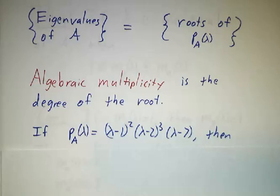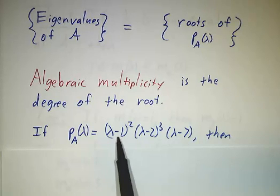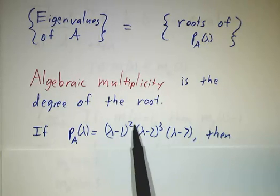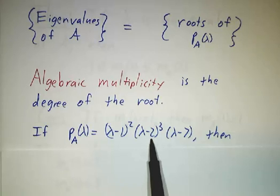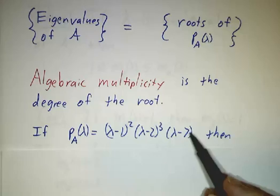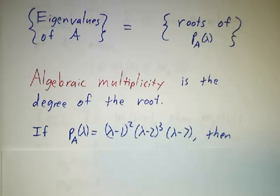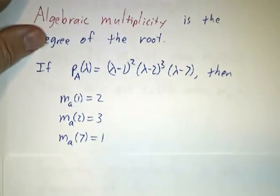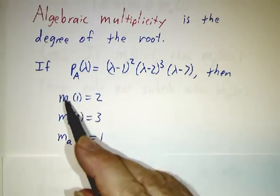So if you have a characteristic polynomial that's (λ-1)²(λ-2)³(λ-7), we say the algebraic multiplicity of 1 is 2. The algebraic multiplicity of 2 is 3. The algebraic multiplicity of 7 is 1. That's just a regular root. And we denote algebraic multiplicity by m_a.